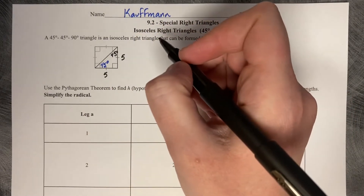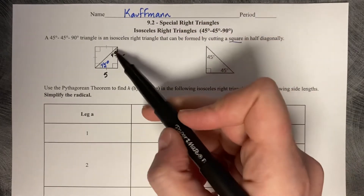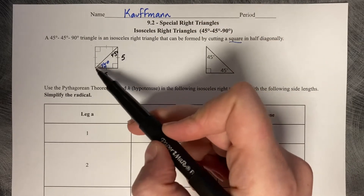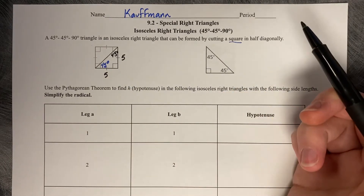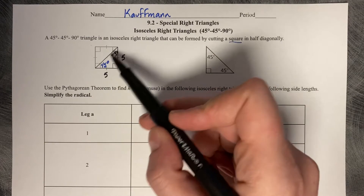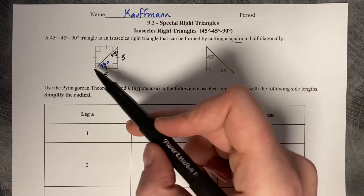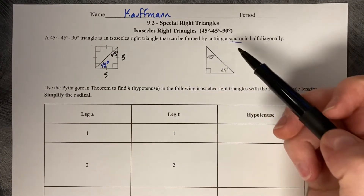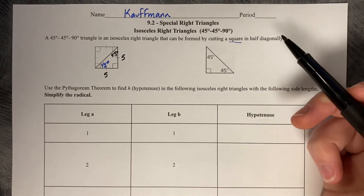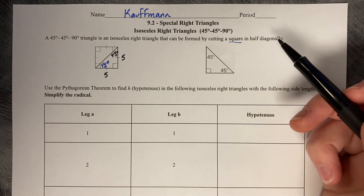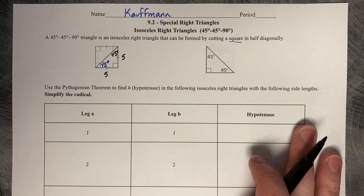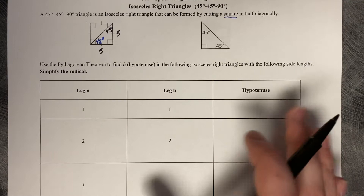A common misconception students have is that they think the diagonal length is also five, but it's not. It does have a pattern though. When you are working with a square that's cut by a diagonal, there is a pattern for how long that diagonal length is in reference to the leg length. So that's what we're going to discover right now — how long is that hypotenuse?